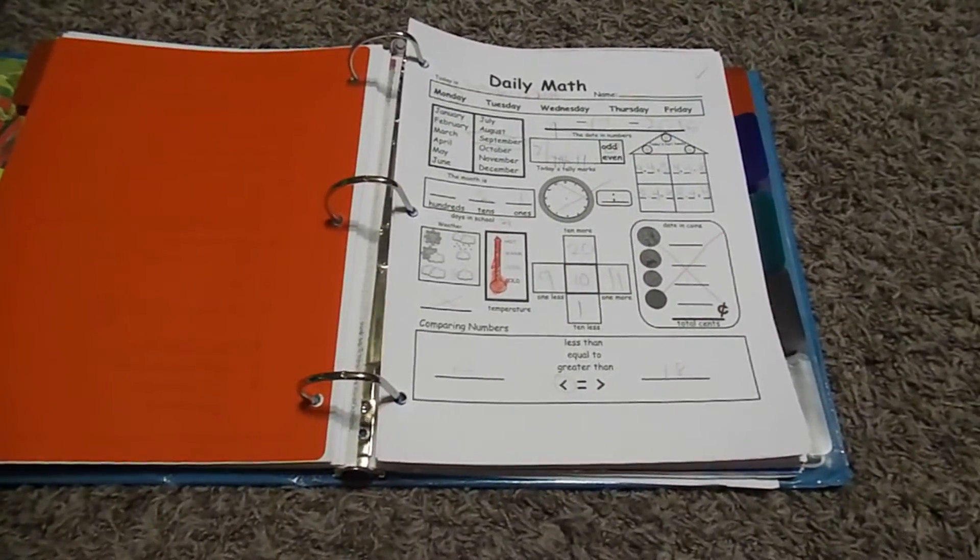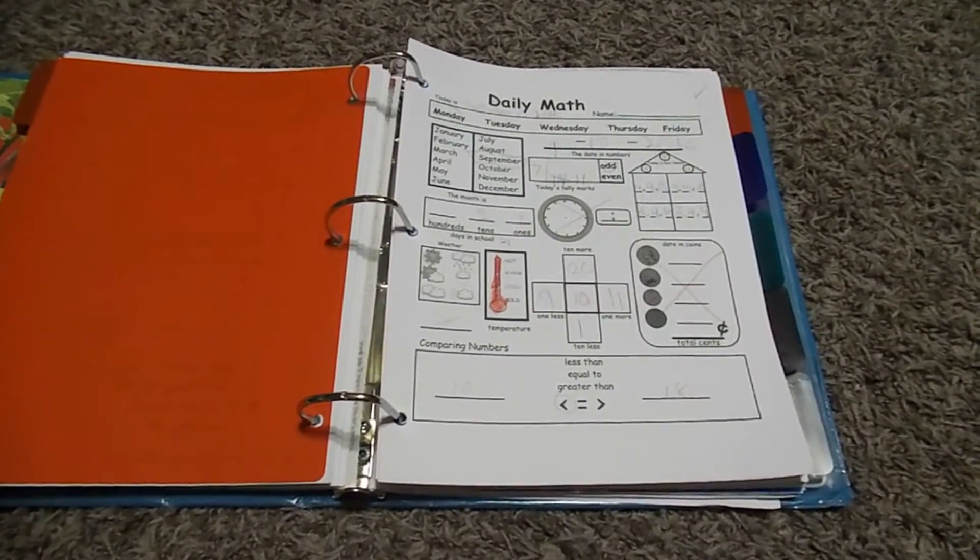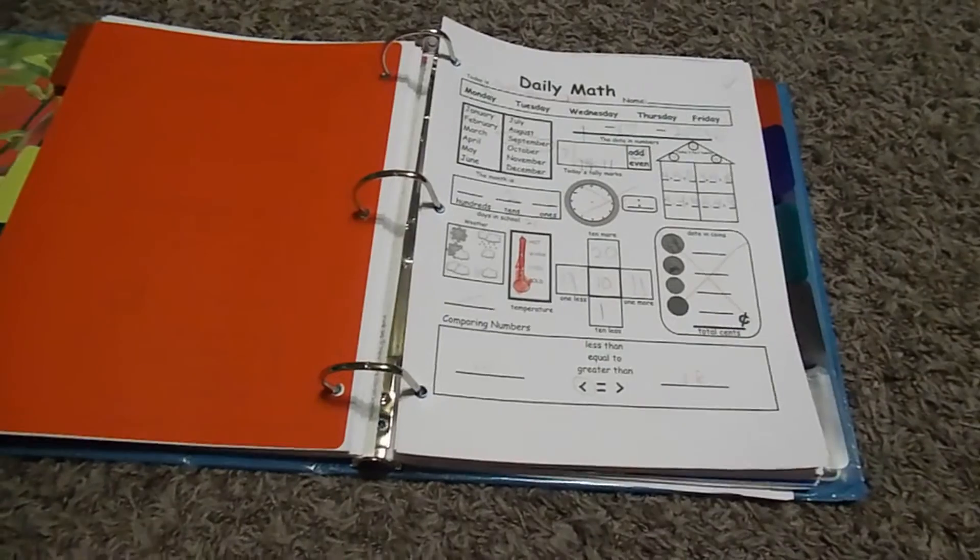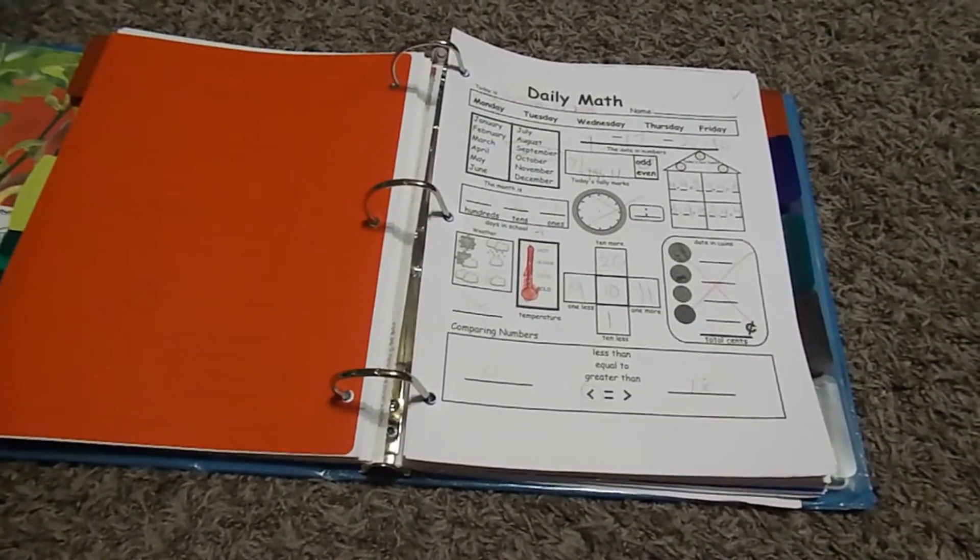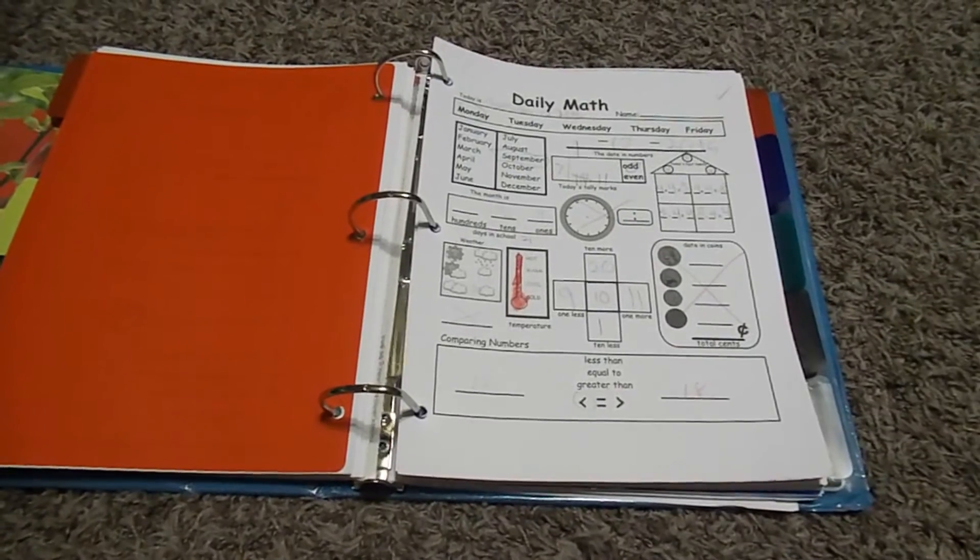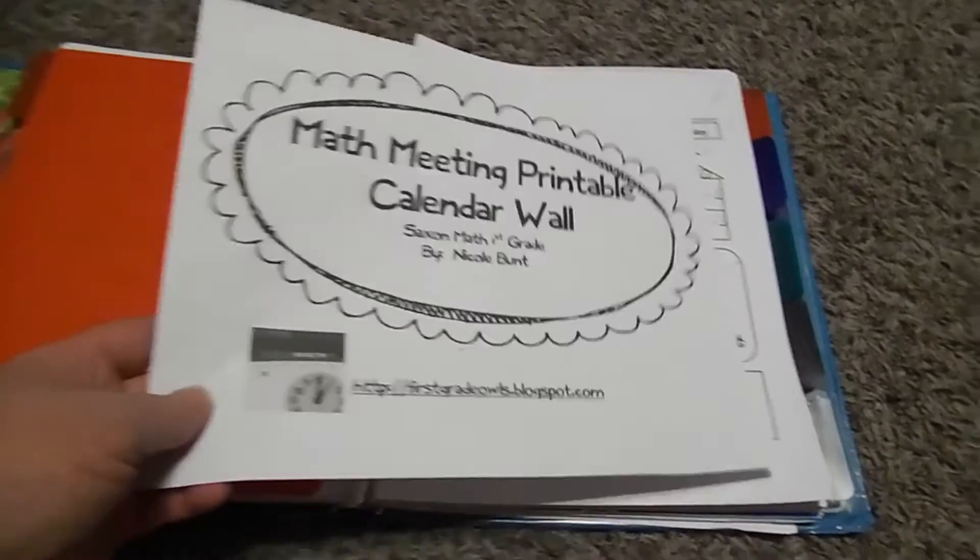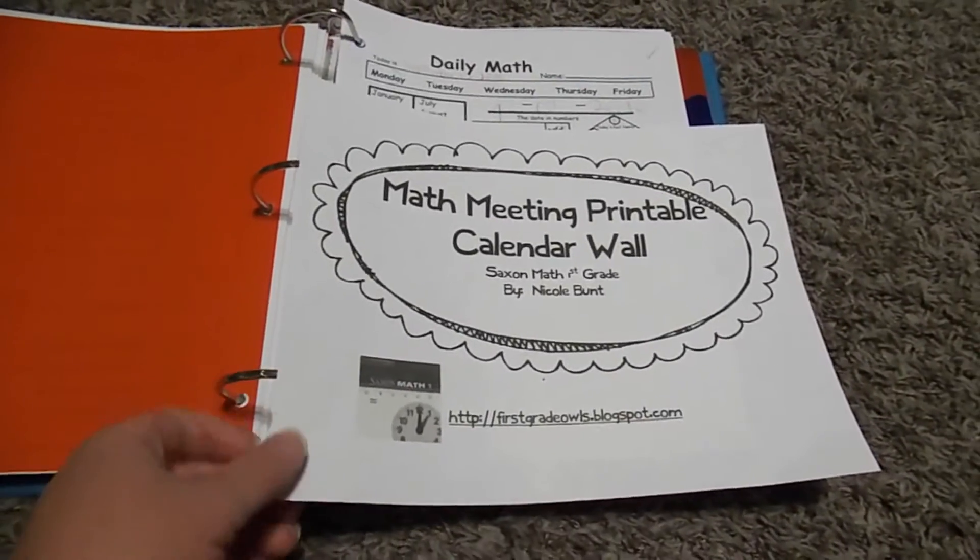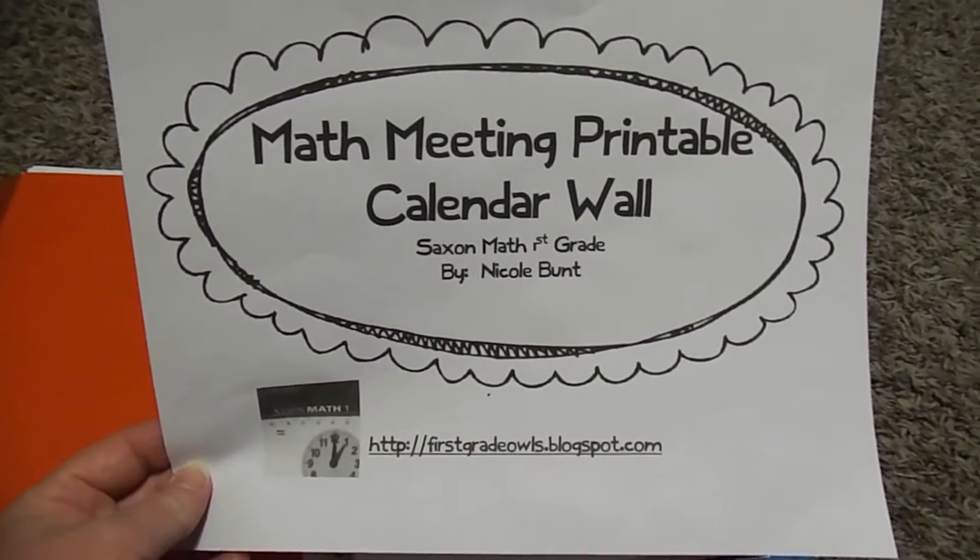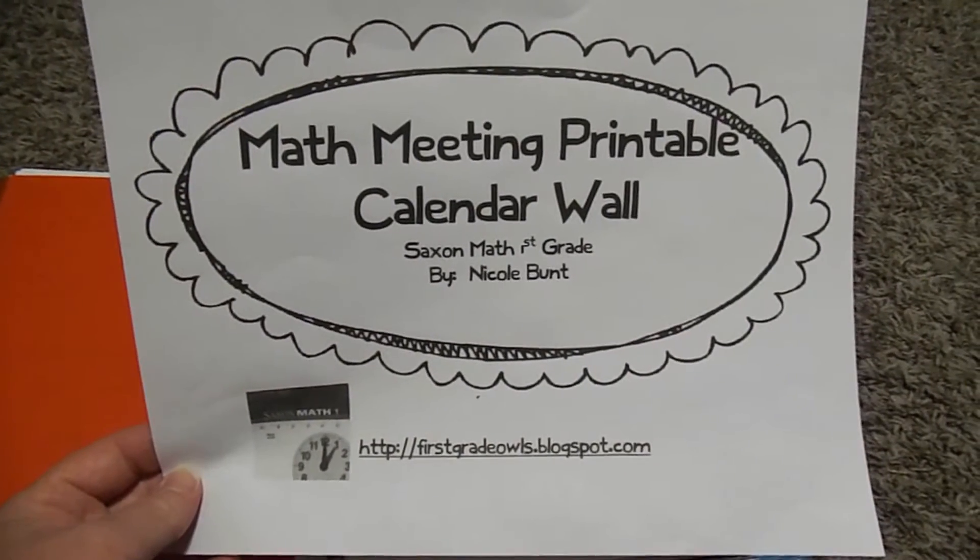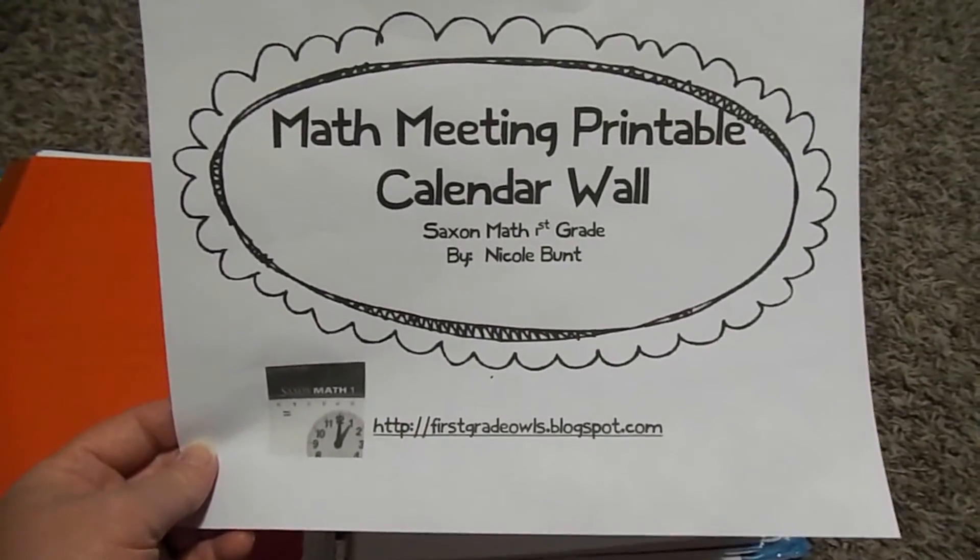I have a sheet that goes over basic math concepts that are a review that we don't want to forget as we move on to other things. And I've used two different resources or products that I've found. And they're both off of Teachers Pay Teachers. And I will provide links below. But I thought I'd show you first what we used last year because I really think it's a great product. And at the time it was free and I believe it still is. It's a math meeting printable calendar wall. And I really like this. And this was a Teachers Pay Teachers.